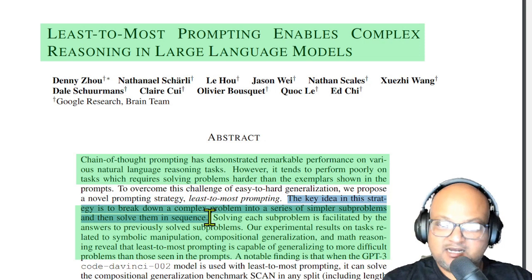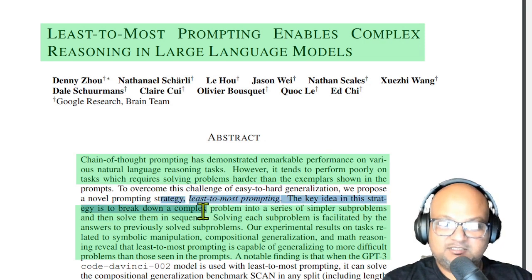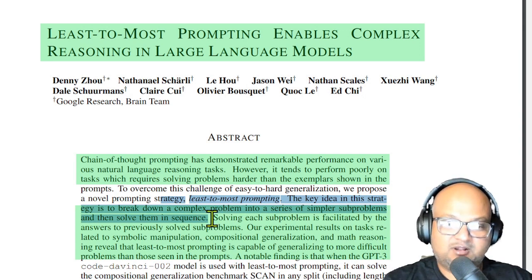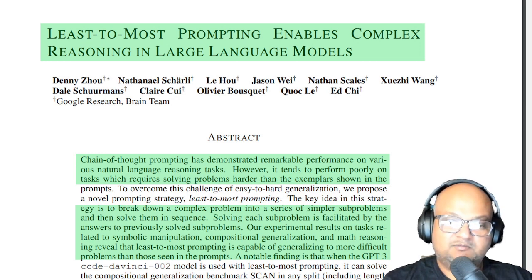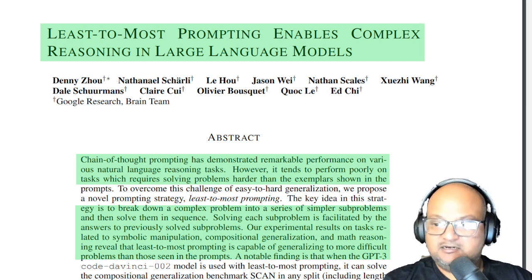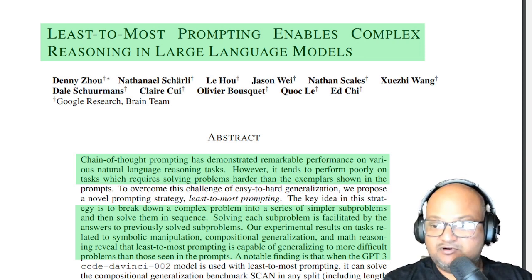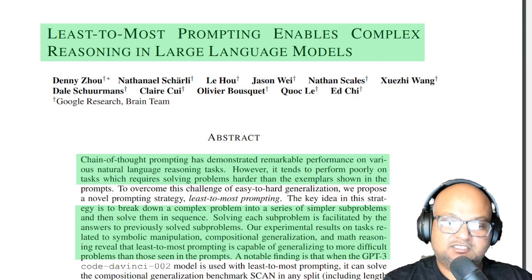The basic idea is to break down a complex problem into simpler sub-problems and then solve those simpler sub-problems. And it turns out this kind of prompting enables you to get much higher performance on a range of benchmarks that test for general reasoning and symbolic manipulation with LLMs.